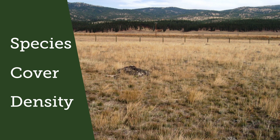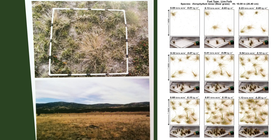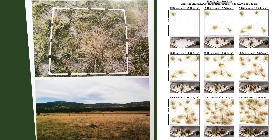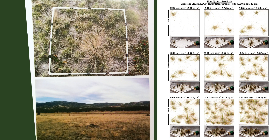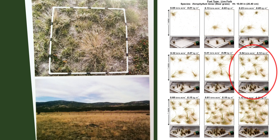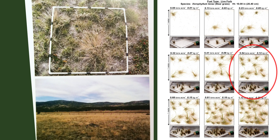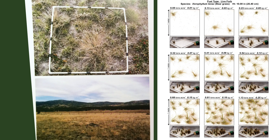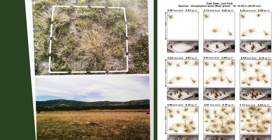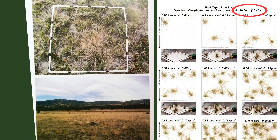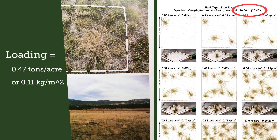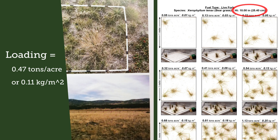Looking at an example from the calibration guide: first, select the correct reference page. Here, we measure fuel loading for all species together. The reference page that most closely resembles our site is page 30 of the photo load manual, or bear grass. Next, select the picture that best represents the cover and density by finding the picture that over-represents, and then settling on a loading. Once a picture is chosen, the corresponding loading must be adjusted for differences between height in the picture and height in the field. From the calibration guide, the loading is 0.47 tons per acre, or 0.11 kilograms per meter squared.